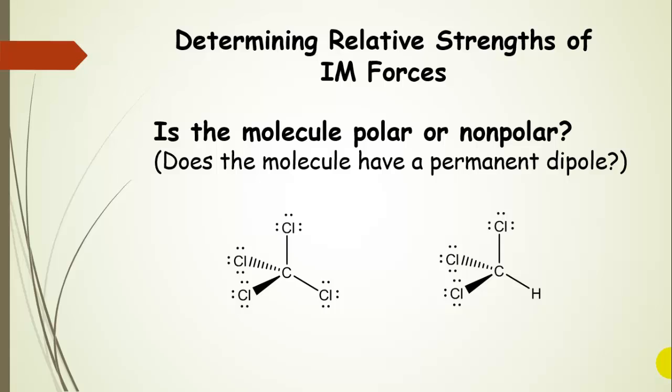One of the first things you're going to do is draw the Lewis structure for the molecule with the geometry. So I have two examples here: carbon tetrachloride and trichloromethane. Now what we want to do is analyze these two molecules and see if there's a permanent molecular dipole in it.